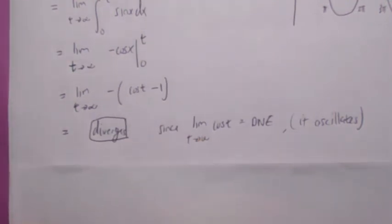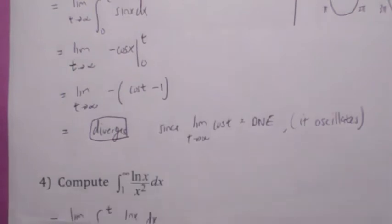Using the limit as t goes to infinity of the integral from 0 to t of sin(x) dx: when you compute the integral, you get negative cos(x) from 0 to t. Taking the limit, the reason this diverges is because the cosine function — the limit as t goes to infinity of cosine — does not exist because it oscillates. So this improper integral does not exist.